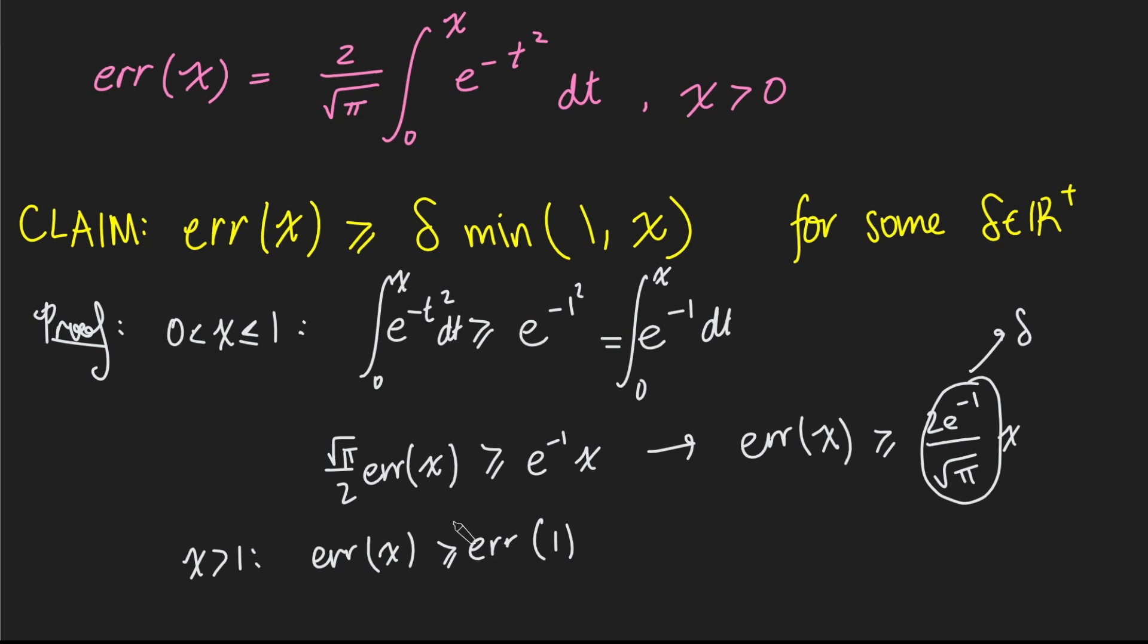In fact, strictly bigger than error of 1. And what is error of 1? Well, that's just by definition 2 over root pi times the integral from 0 to 1 of e to the negative t squared dt.